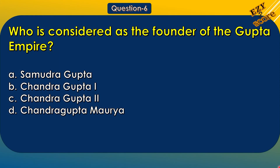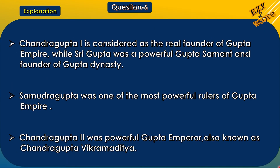Question 6: Who is considered the founder of the Gupta Empire? Options: A. Samudra Gupta, B. Chandragupta I, C. Chandragupta II, D. Chandragupta Maurya. The correct answer is option B, Chandragupta I. Chandragupta I is considered the real founder of the Gupta Empire, while Sri Gupta was a powerful Gupta Samant and founder of the Gupta dynasty. Samudra Gupta was one of the most powerful rulers of the Gupta Empire. Chandragupta II was a powerful Gupta emperor, also known as Chandragupta Vikramaditya.